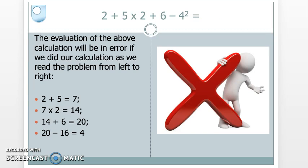Consider a simple calculation: 2 + 5 × 2 + 6 - 4². Now the evaluation of the above, if I'm trying to do it on a calculator, there might be a temptation just to do the calculation as we read it from left to right. So 2 + 5 is 7, 7 × 2 is 14, 14 + 6 is 20, then finally 20 - 16 is 4. But this is the wrong approach.